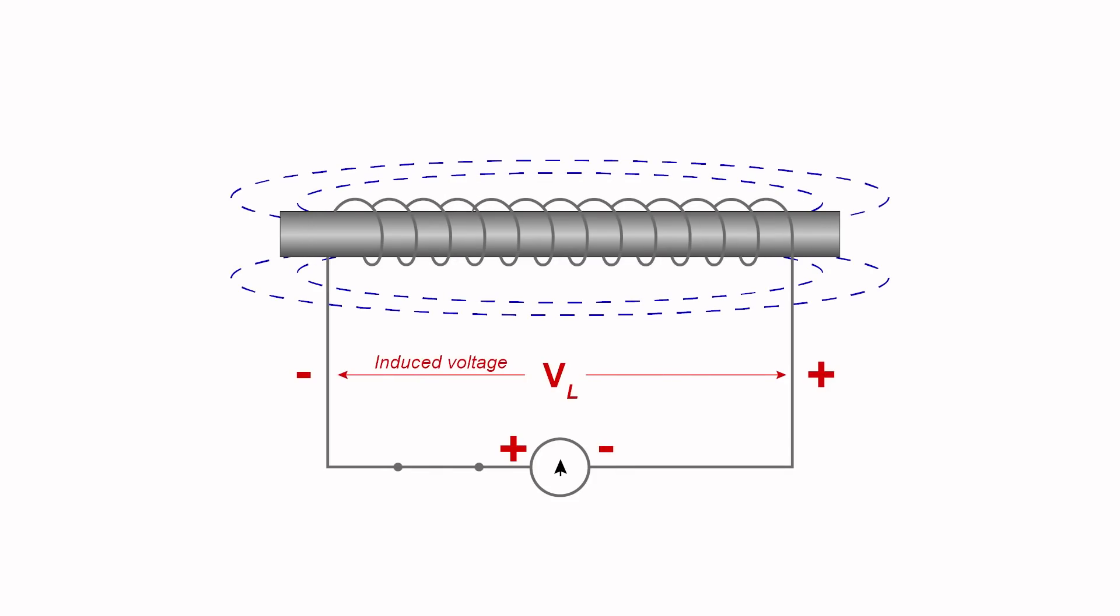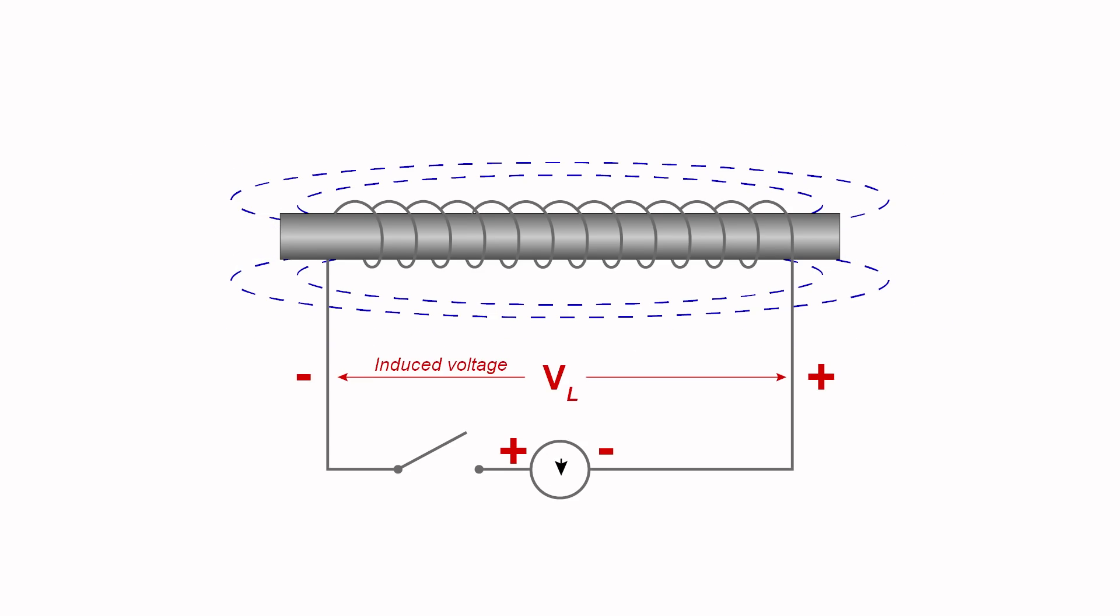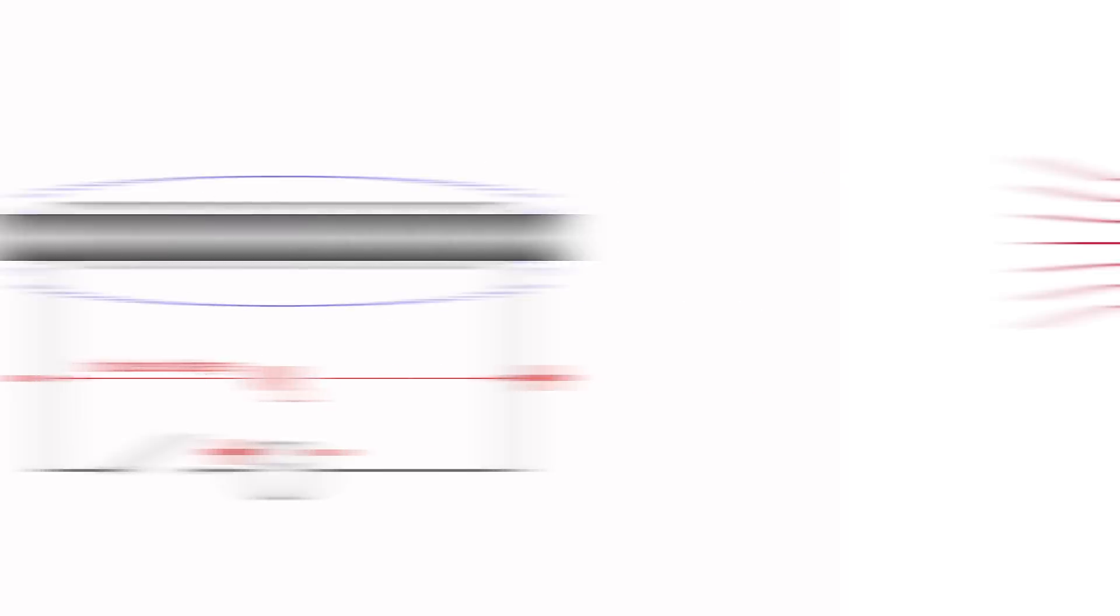From our last episode, we know that inductors are resistant to change. When there is a change in current, the voltage potential across the inductor increases. When you put two inductors near each other, the magnetic fields affect each other, inducing a voltage in the other inductor. This is the basic principle of how a transformer works.